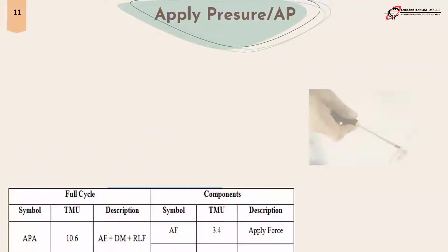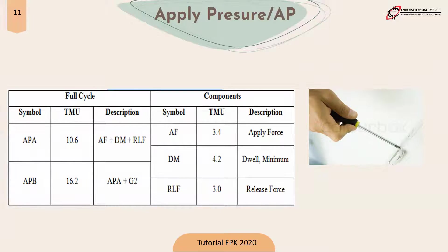The next element is apply pressure or AP. APA is described by the symbols AF, DM, and RLF, referring to a trapezoidal graph where AF is apply force occurring when pressure is applied during rotation, DM is the dwell minimum meaning pressing normally or constant, and RLF is release force or releasing the depressive pressure. APB involves additional re-grasp or additional grip, usually consisting of APA plus grasp 2. For example, holding a screwdriver uncomfortably so the grip is replaced. Use the full cycle TMU table for direct use rather than the components table.